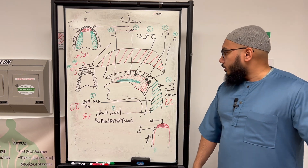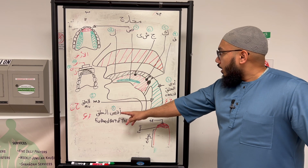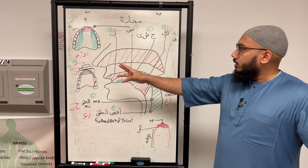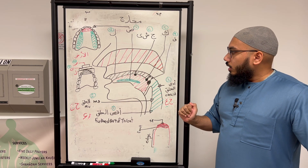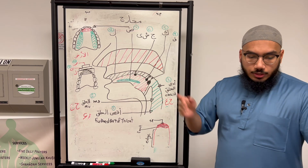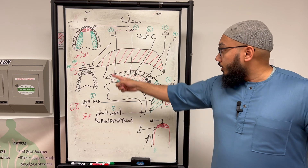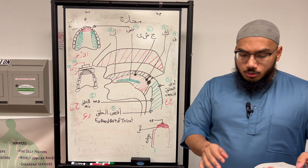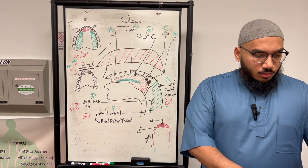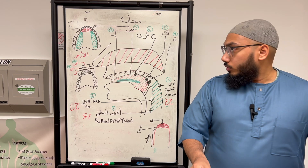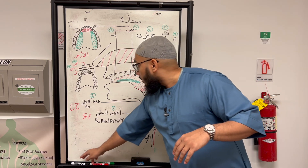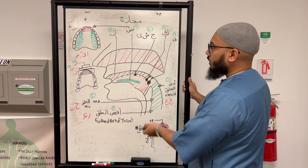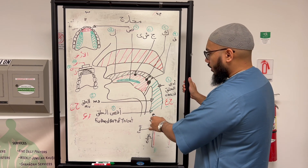Last time we were talking about the Makharij, and we've categorized the Makharij into several groups. These numbers are not the 17 total — they're the groupings. There are actually 17 total Makharij. We've reached up to number 10, which is the articulation point for certain letters. We move on after this to the next set, continuing our discussion of how the scholars of Tajweed mention the Makharij and describe them.